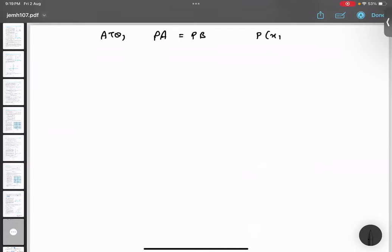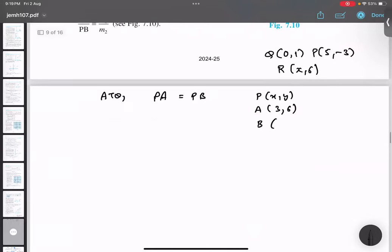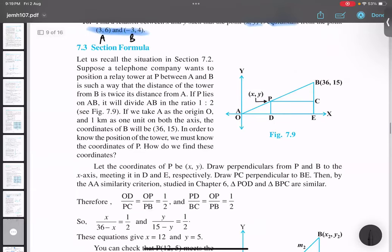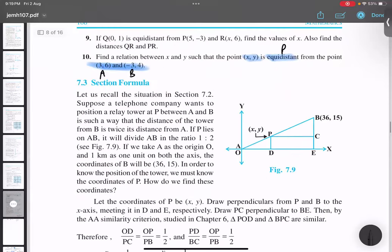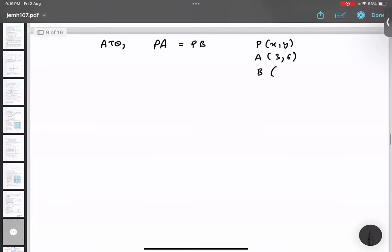P point is x, y. What is A point? 3, 6. What is the B point? Minus 3, 4. Incorrect, na? Minus 3, 4. So we will do PA distance and PB distance.